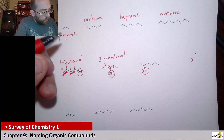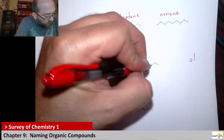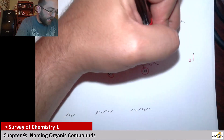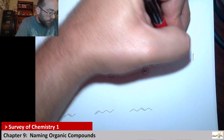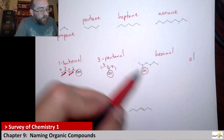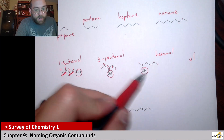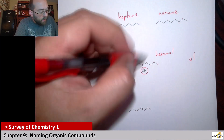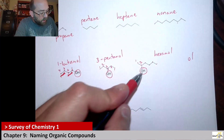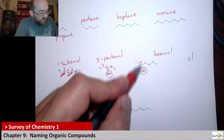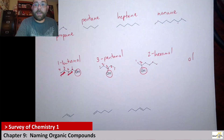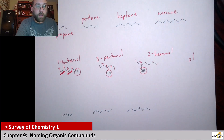Next up, we've got one, two, three, four, five, six — so this is hexanol. We want to start numbering on this side, so we would get the alcohol at the second carbon position. So we would call this 2-hexanol.